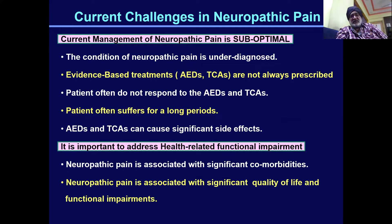The current challenges in neuropathic pain are: the treatment offered has been suboptimal, possibly because neuropathic pain has been underdiagnosed. The evidence-based treatments — antiepileptic drugs and tricyclic antidepressants — have not been well prescribed, and patients often do not respond well to them. Patients also need to be treated for a long period. It is very important to address the health-related functional impairment and comorbidities associated with neuropathic pain, which always affect quality of life and functional status.